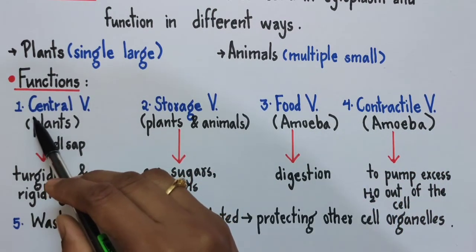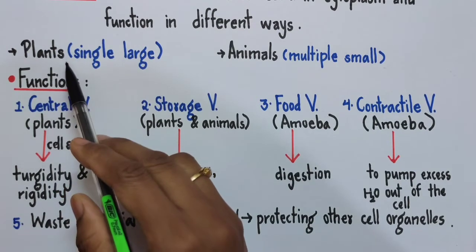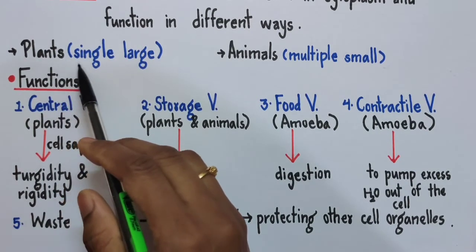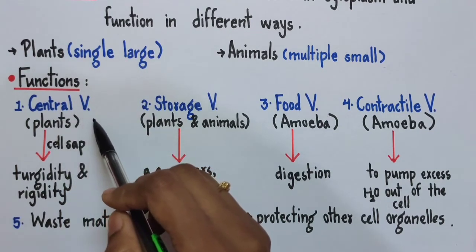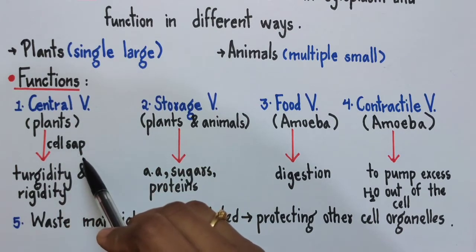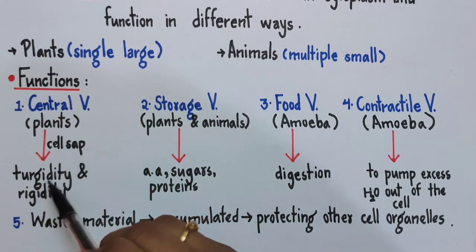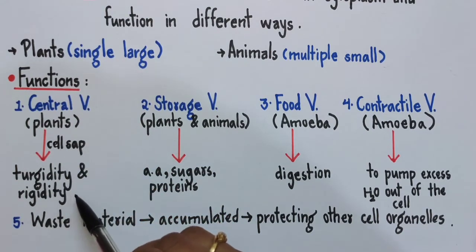The first one is central vacuole. If you remember, I had told you that plant cells have a single large vacuole called the central vacuole, and this central vacuole is filled with cell sap and provides turgidity and rigidity to the plant cells.